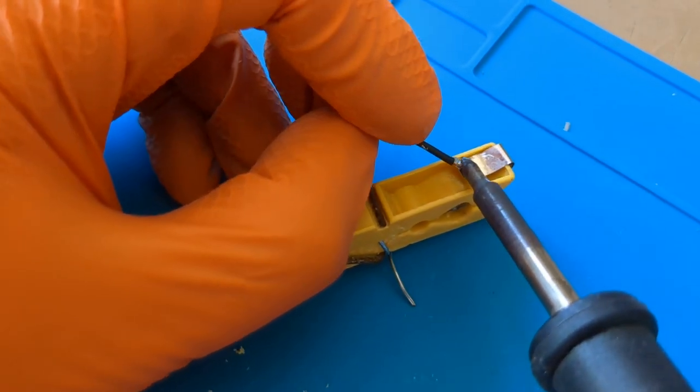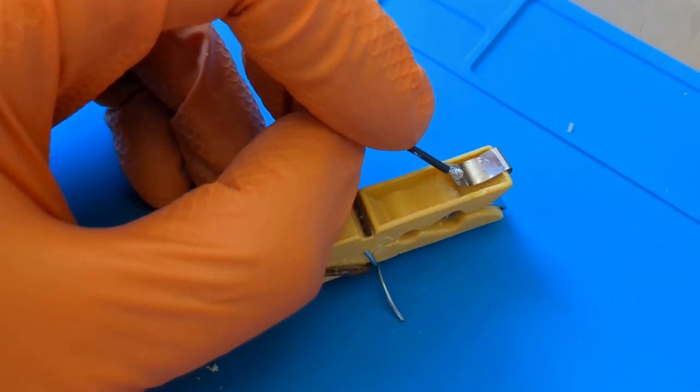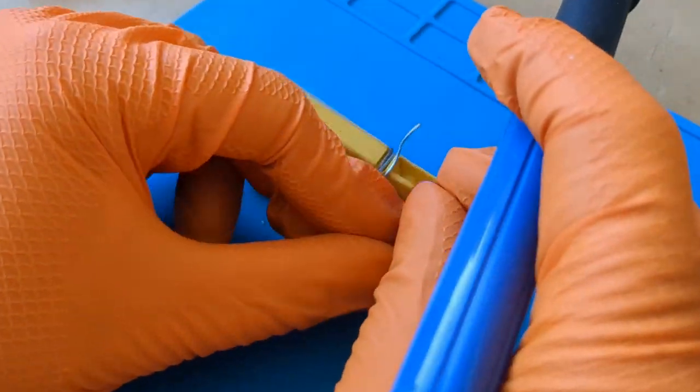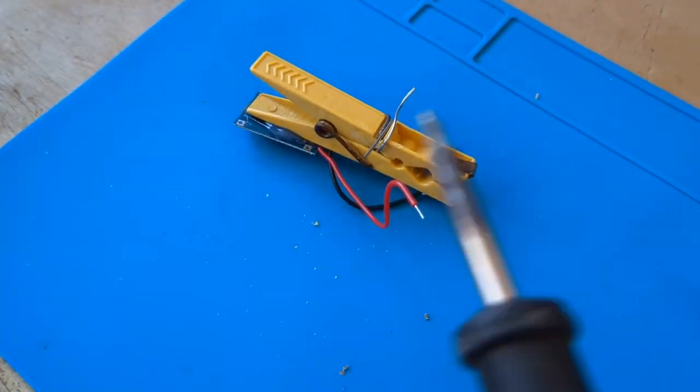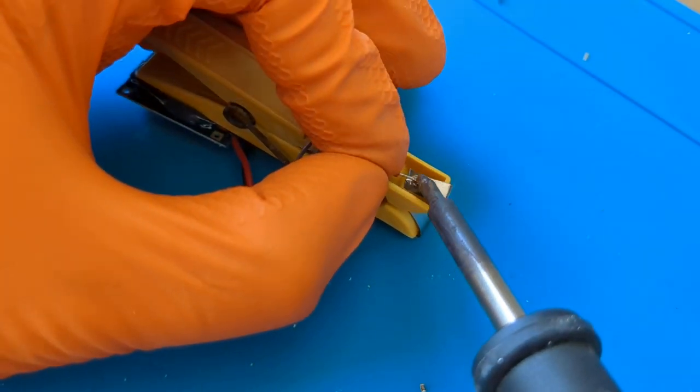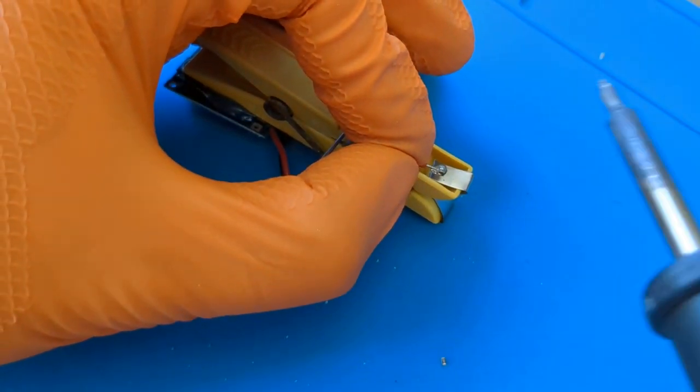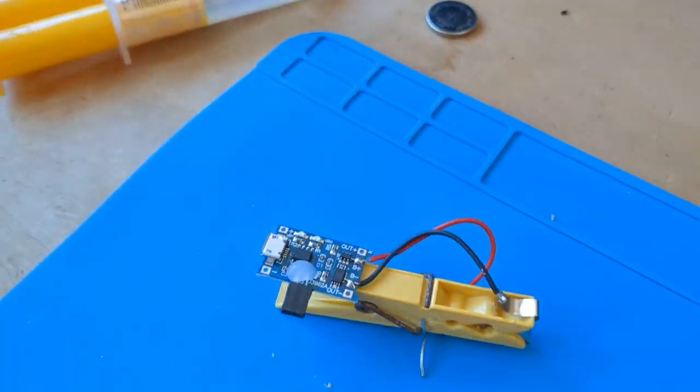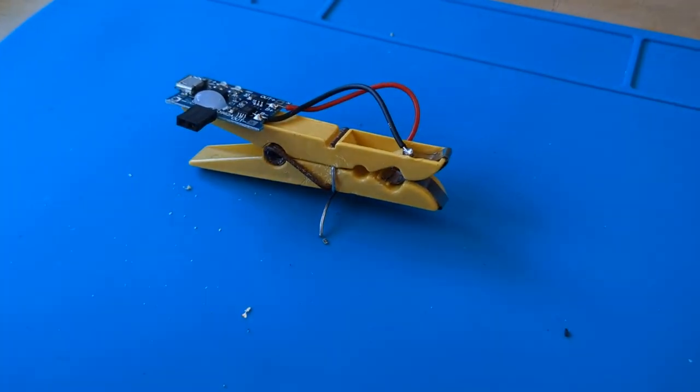Finally, we solder the two wires onto the nickel strip pieces. We did it! We have now completed our charger.